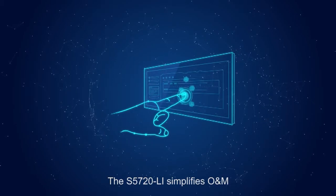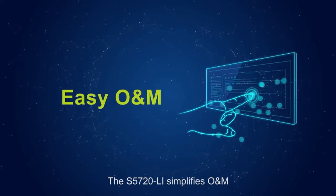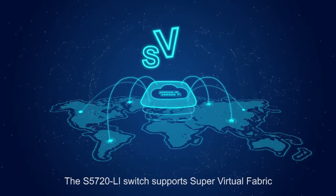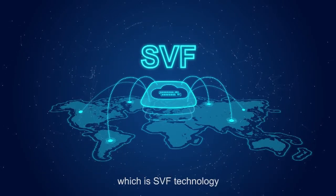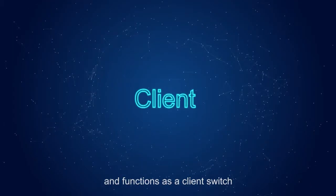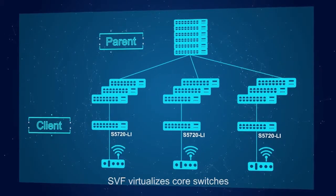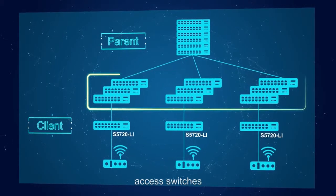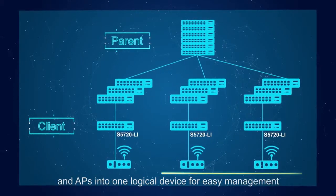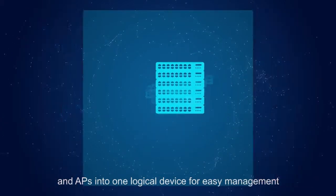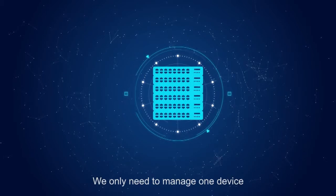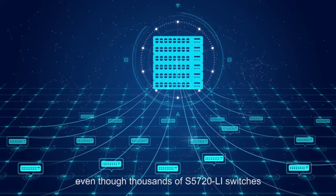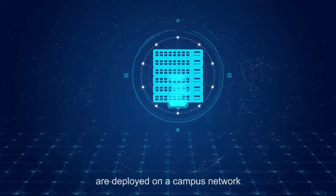The S5720 Li simplifies O&M. It supports super virtual fabric, which is SVF technology, and functions as a client switch. SVF virtualizes core switches, aggregation switches, access switches, and APs into one logical device for easy management. We only need to manage one device, even though thousands of S5720 Li switches are deployed on a campus network.